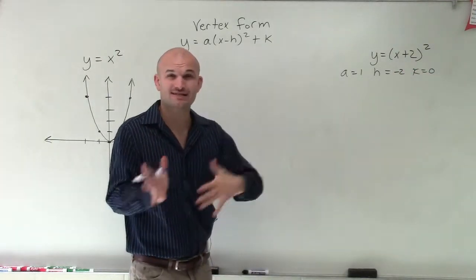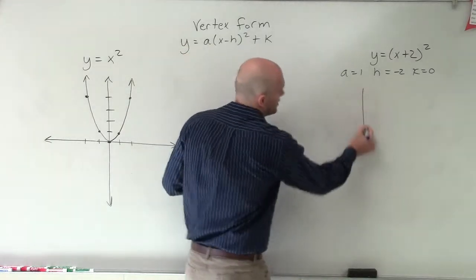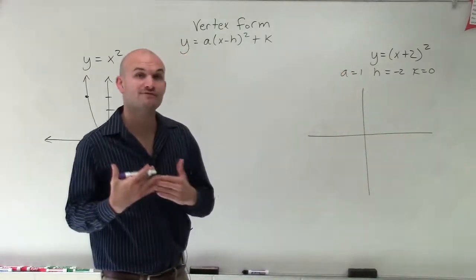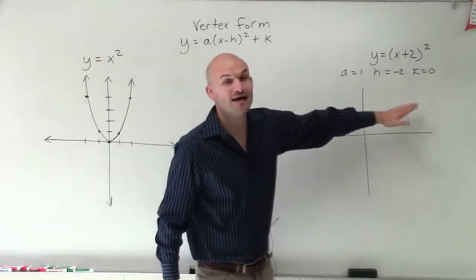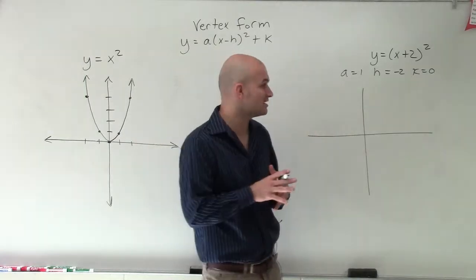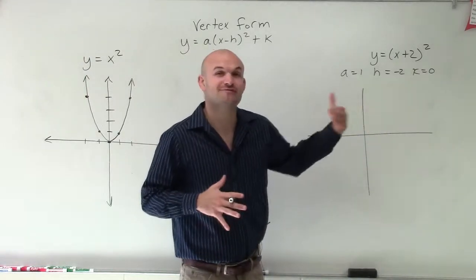So what we're going to do is take a look and see how that's going to affect our graph. Now remember, our h told us where to shift our graph left or right. K was dealing with up and down, and a dealt with either reflection or stretching and compressing. But h told us to shift left or right.